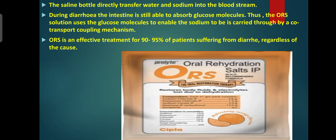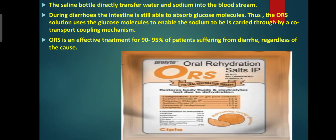Rehydration means absorbing moisture after dehydration. Next is antacid. Acidity is a set of symptoms caused by excess production of acid by the gastric glands of the stomach. Your stomach naturally produces gastric or hydrochloric acid, which helps digest and break down food. Acidity issues arise when there is excess production of this acid due to triggers such as acidic food, spicy food, alcohol, dehydration, and stress.